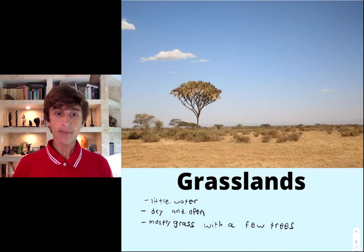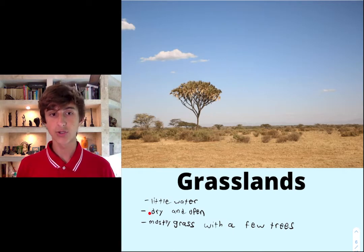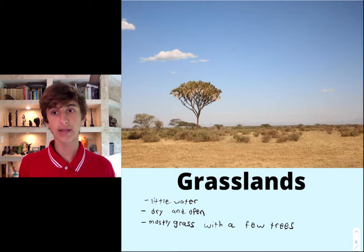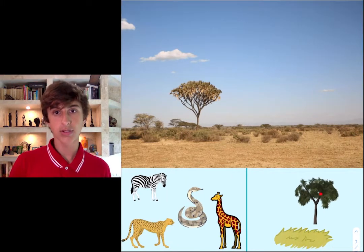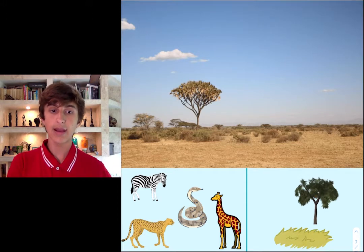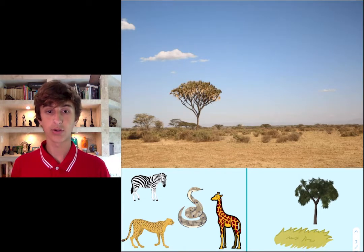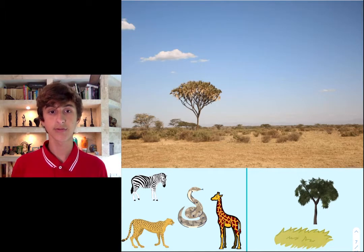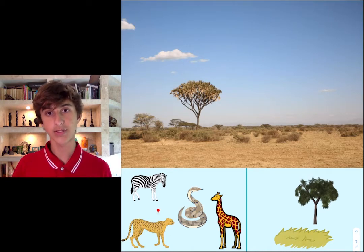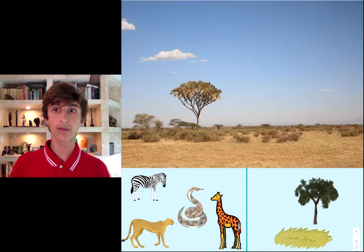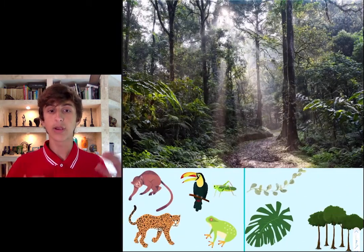In the grasslands, there's little water similar to the desert — it's dry and open. Like the name says, it's mostly grass with a few trees. The animals that live there need to feed off of that. The zebra, for example, just eats the grass — it's a grazing animal. The giraffe can eat leaves from the few trees with little competition. And animals like the cheetah eat grazing animals like the zebra, creating a food chain.